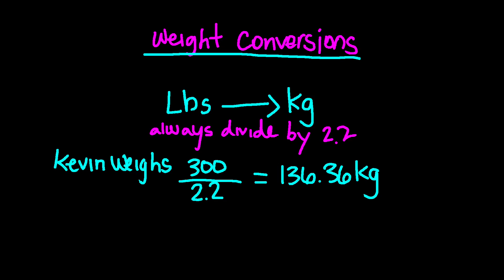Let's say Kevin weighs 300 pounds and you need to convert to kilograms for a dose calculation. You will divide 300 by 2.2, which equals 136.36 kilograms. Now let's do a weight conversion and convert kilograms to pounds.